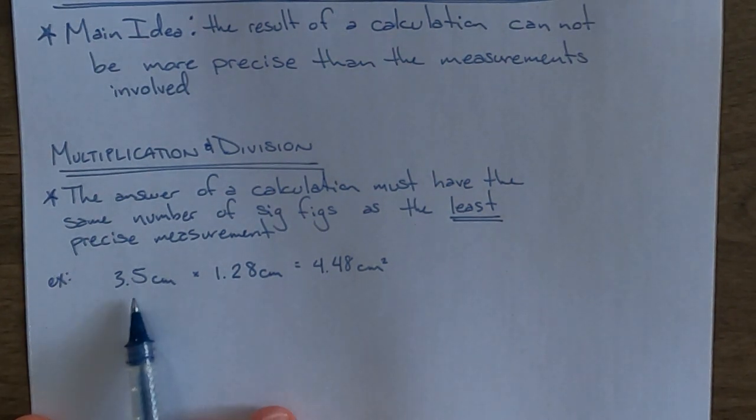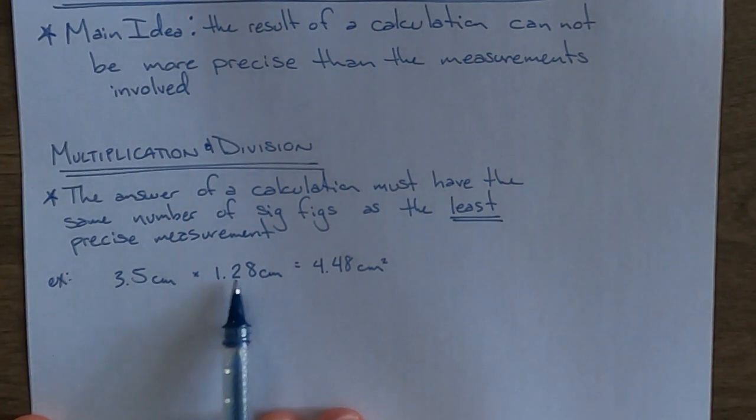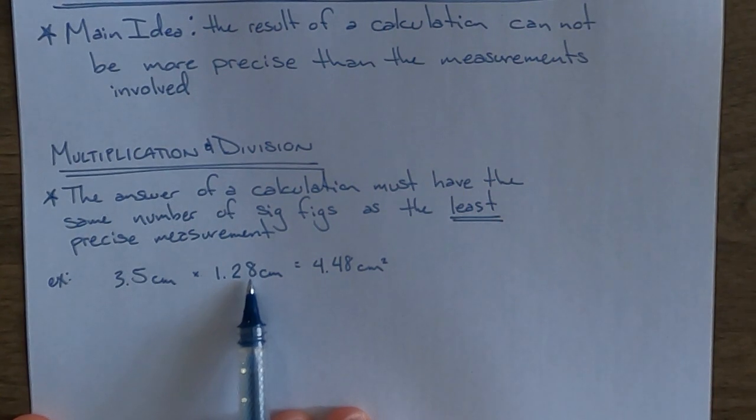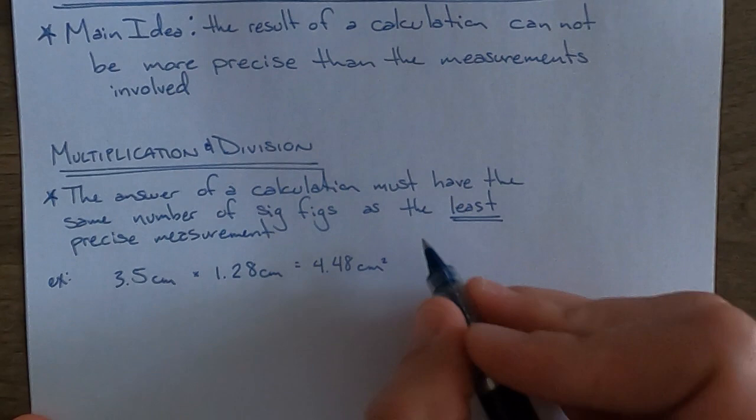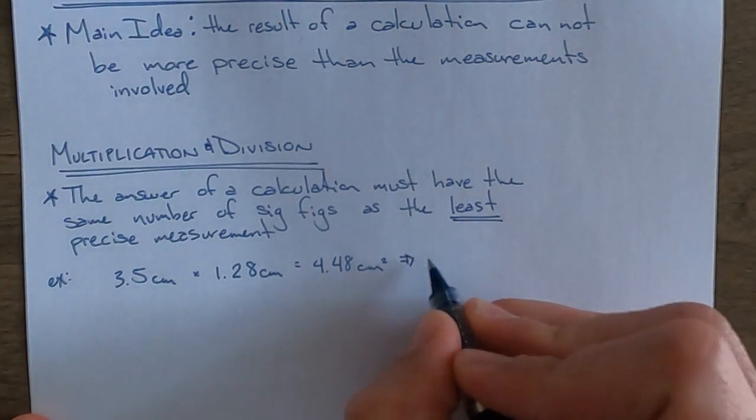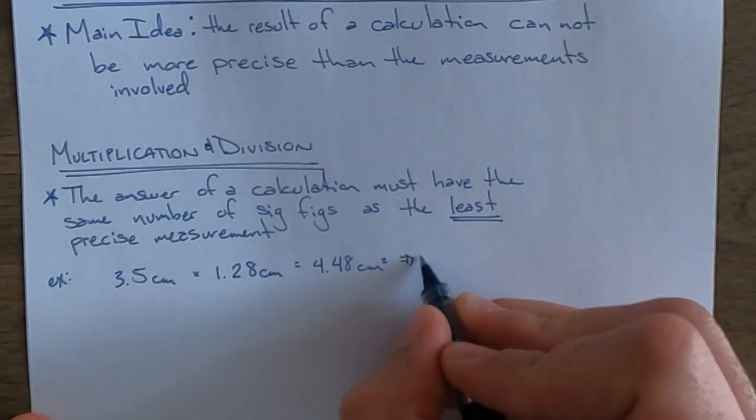It needs to have the same number of significant figures as the measurement with the least in the original problem. This one has two significant figures, this one has three significant figures, so our answer should be rounded so it only has two significant figures. Instead of 4.48 centimeters squared, our correct answer should be 4.5 centimeters squared.